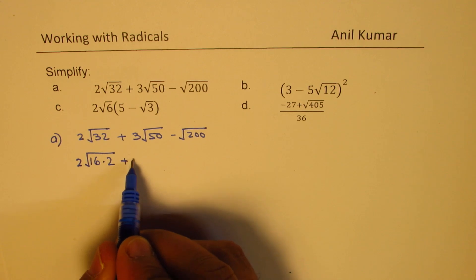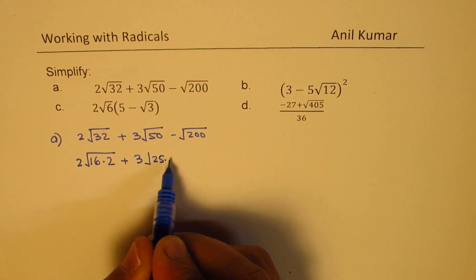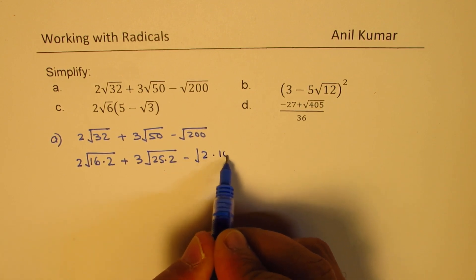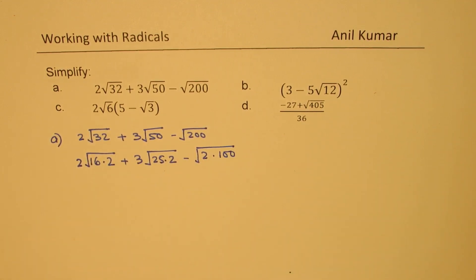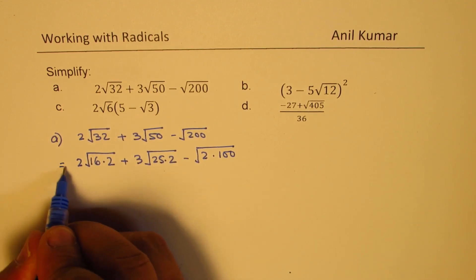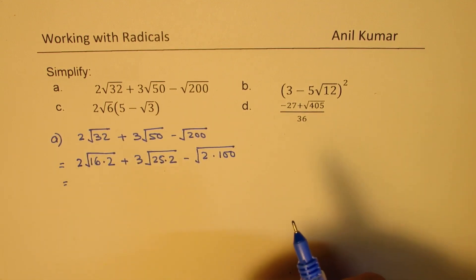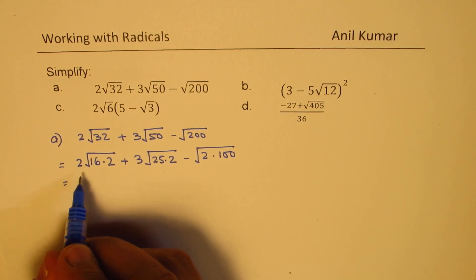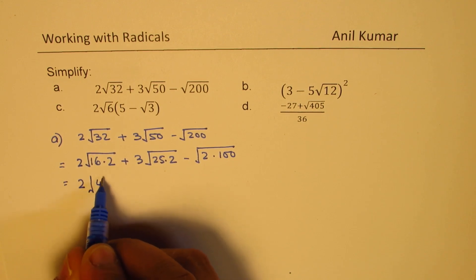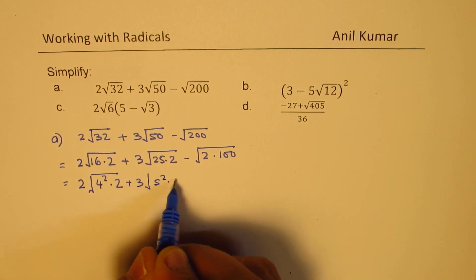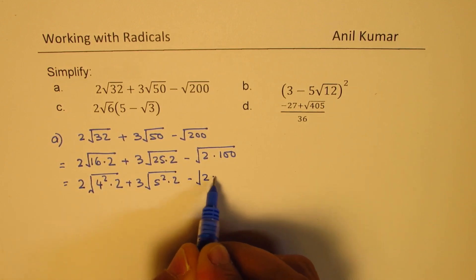Similarly, 50 is 2 times 25, so we could write this as 25 times 2. Now this decimal is not a decimal, but it is a product. 200 can be written as 2 times 100. Now 100 is a perfect square, 10 square is 100. So the equivalent expression could be 16 is like 4 square. So let me introduce one more step here. You could think about 16 as 4 square and then we have 2 here. Similarly, 25 is 5 square times 2 minus 2 times 10 square.